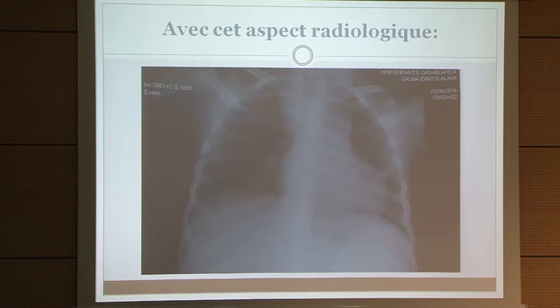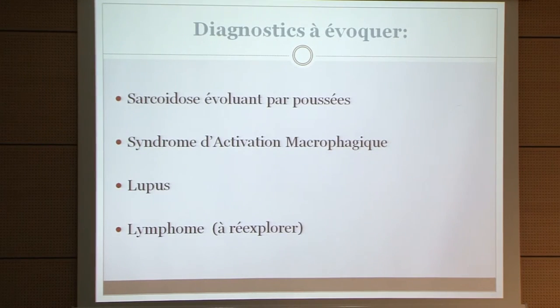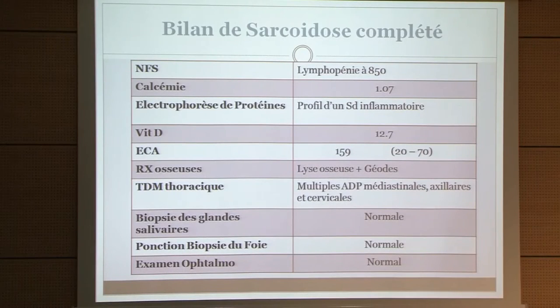Faced with this presentation, sarcoidosis evolving in flares, macrophage activation syndrome, lupus, or lymphoma were considered. Sarcoidosis workup was normal. Protein electrophoresis showed only an inflammatory syndrome; vitamin D was normal. Bone X-ray showed osteolysis with geodes. Chest CT showed mediastinal, axillary, and cervical adenopathies. Salivary gland biopsy was normal, liver biopsy was normal, and ophthalmological examination was normal.